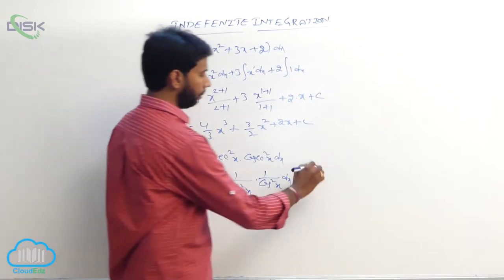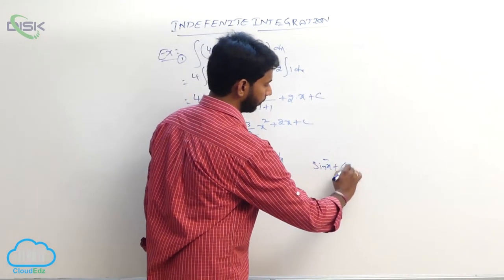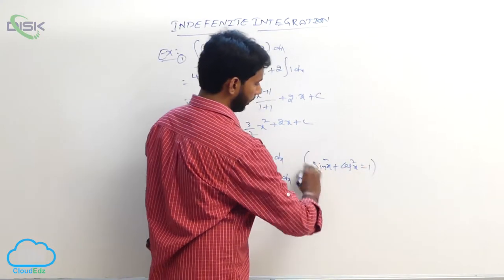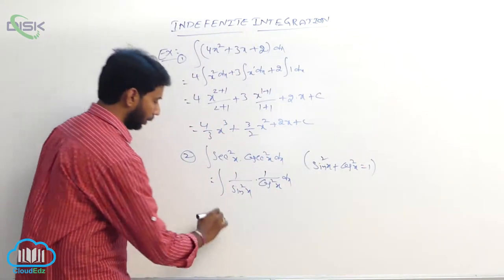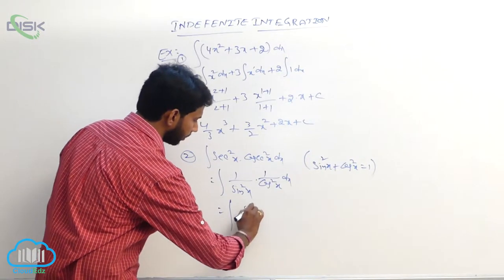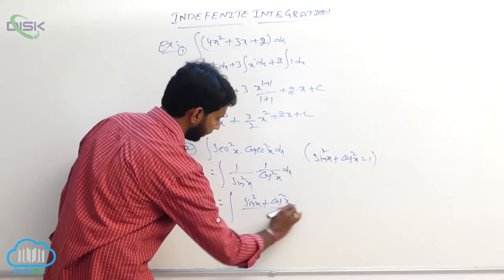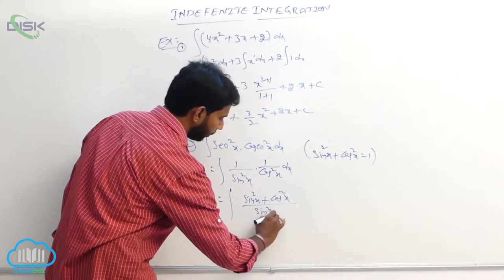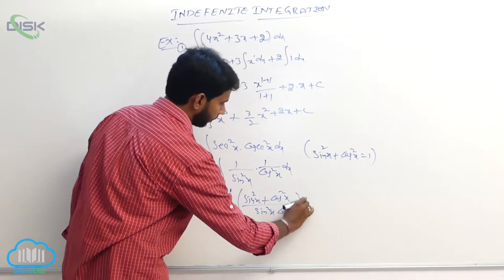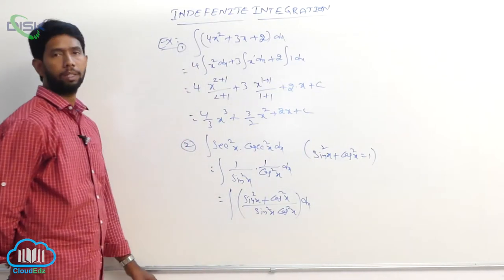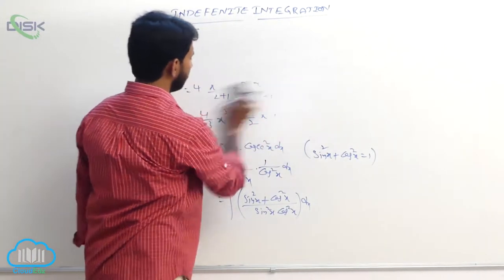In the numerator, use the identity sin²x + cos²x = 1. Write the numerator as sin²x + cos²x, so the integral becomes integral of (sin²x + cos²x)/(sin²x cos²x) dx. Separate the two terms.